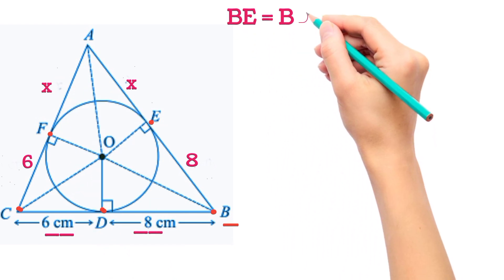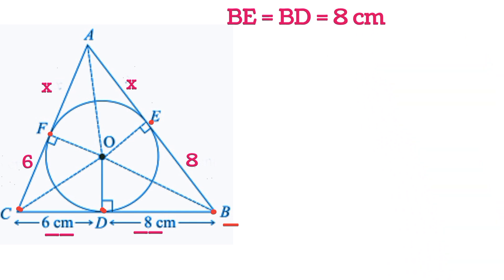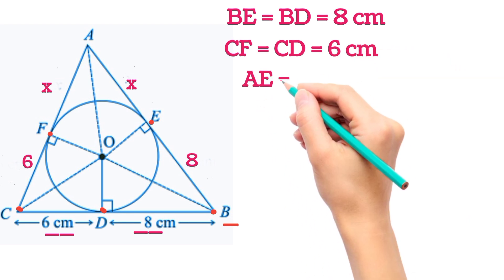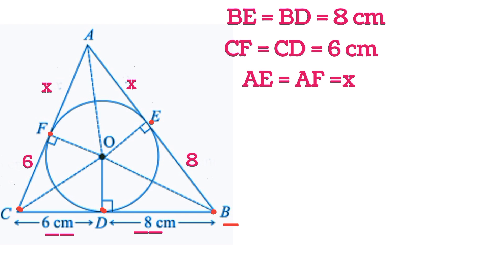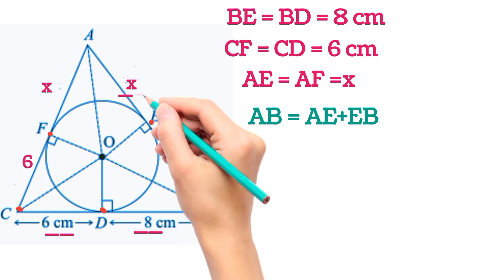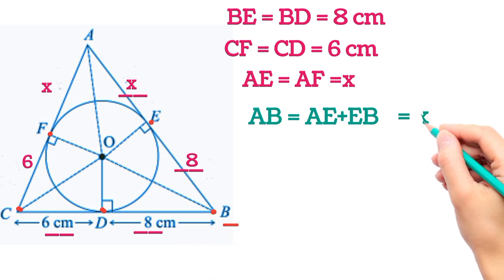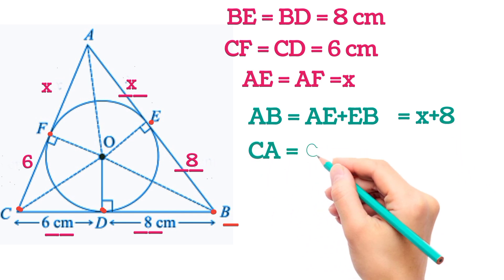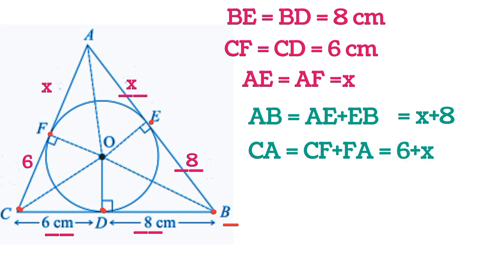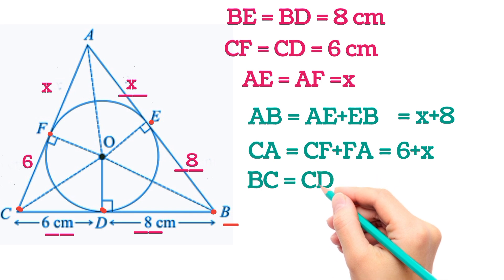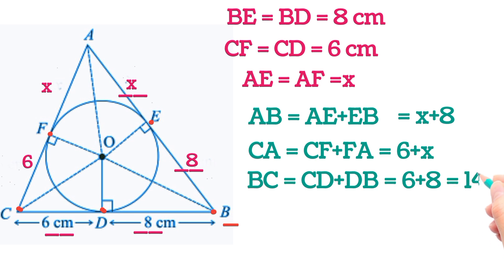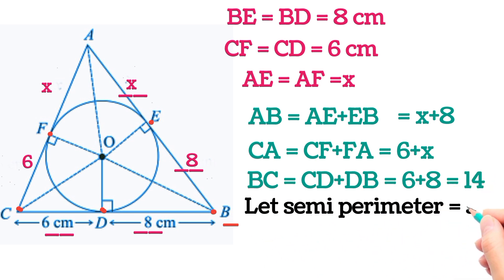So we have BE = BD = 8 centimeters, CF = CD = 6 centimeters, and AE = AF = x. Now AB can be written as AE + EB = x + 8. Similarly, CA = CF + FA = 6 + x, and BC = CD + DB = 6 + 8 = 14.